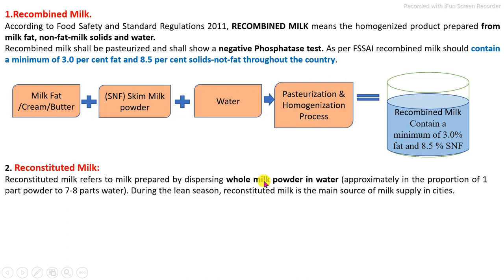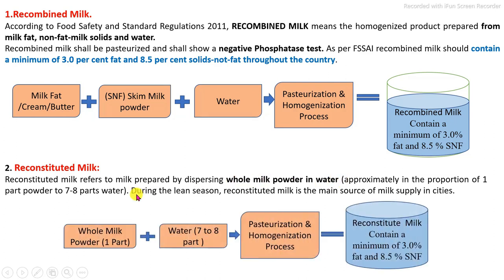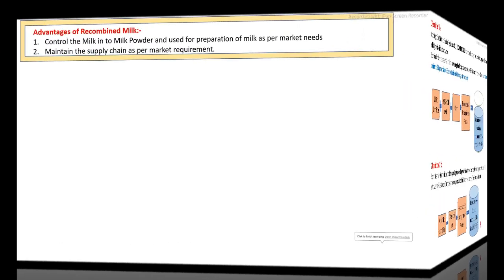Reconstituted milk means milk which is prepared from whole milk powder by addition of water, in a specific production process in which one part of whole milk powder is added to seven to eight parts of water, and then pasteurization and homogenization process is carried out. The addition of water specifically depends on the initial fat and SNF content in order to meet the final requirement of minimum three percent fat and 8.5 percent SNF in the reconstituted milk.